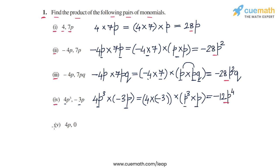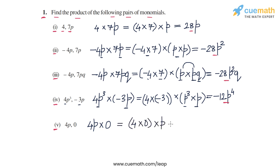Finally, coming to part 5, we have the terms 4p and 0. So 4p into 0. We can multiply the coefficients: 4 into 0 — the variable part is p — but 4 into 0 is 0, and 0 into p will also be 0. So we will get the product as 0. This is the answer for part 5, and with this we have completed question number 1.